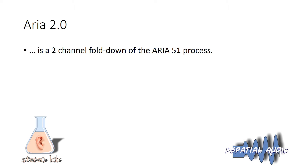Aria 2.0 is a two-channel fold-down of the Aria 5.1 process — somewhat ironic in that we up-convert the stereo to 5.1 and then fold it back down to 2.0. This doesn't mean ignoring the rear channels; it's a fold-down that includes the extra information generated via the up-conversion process.